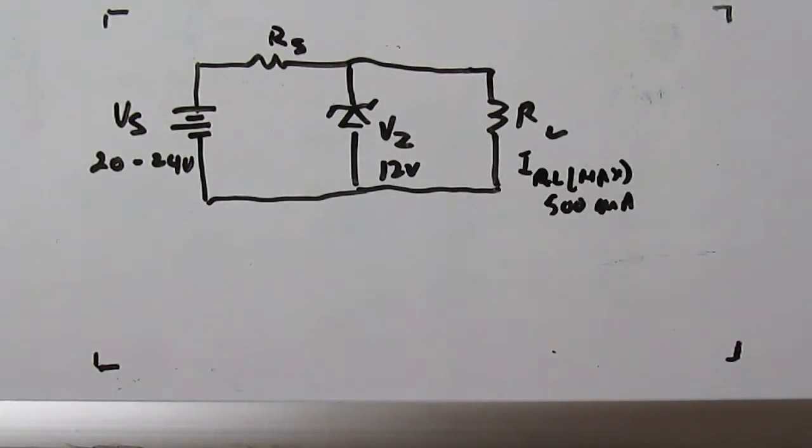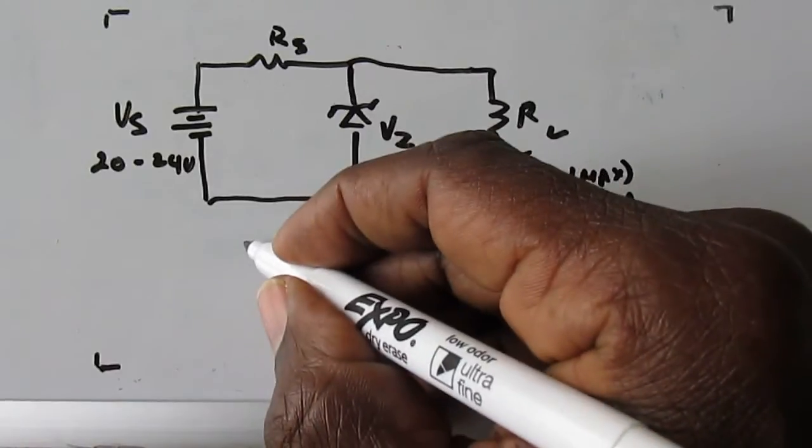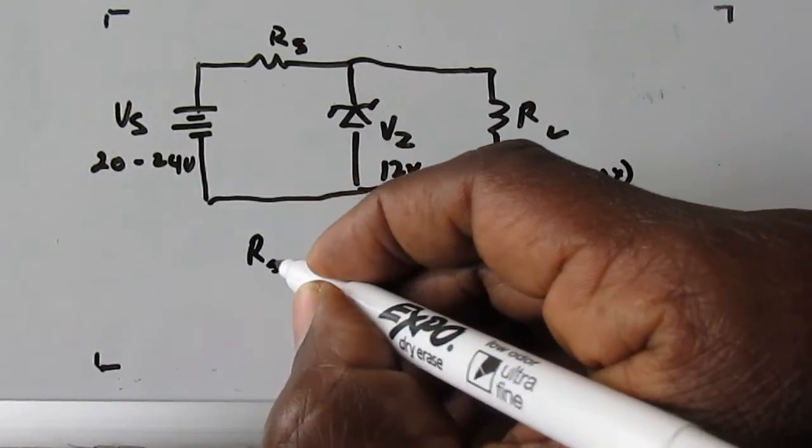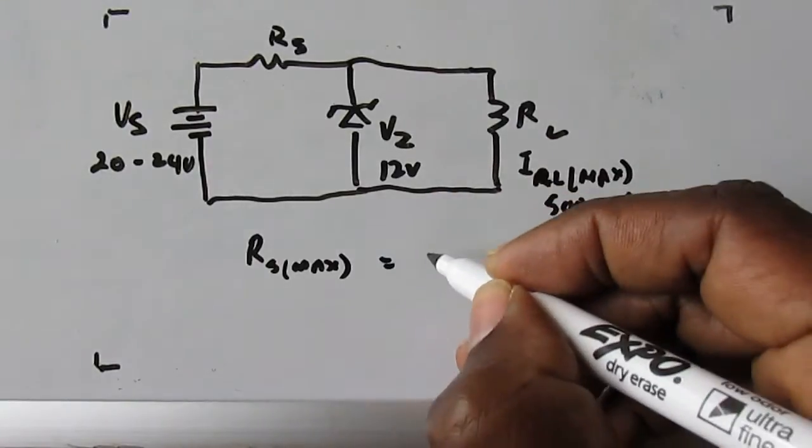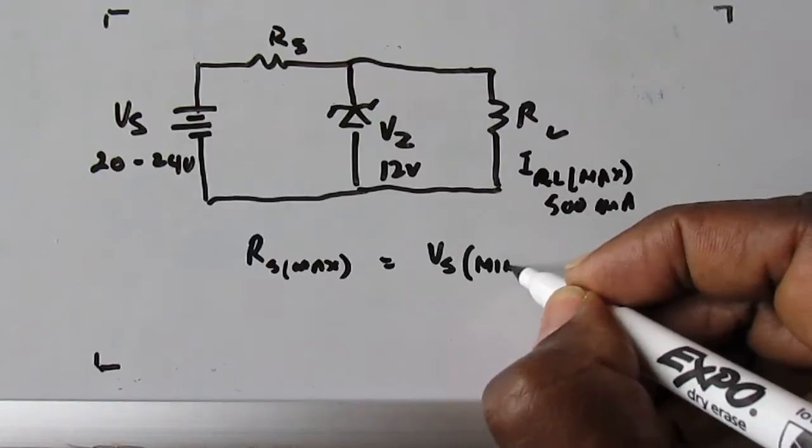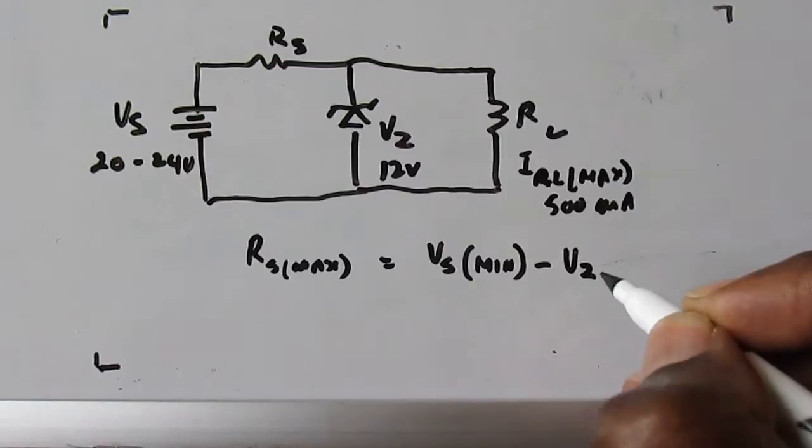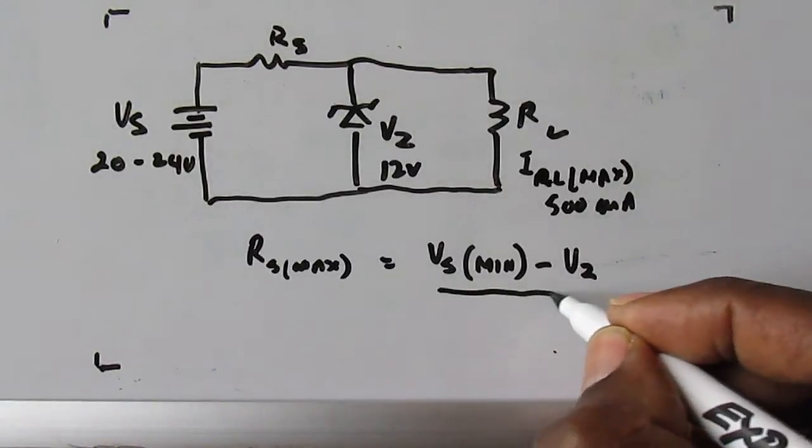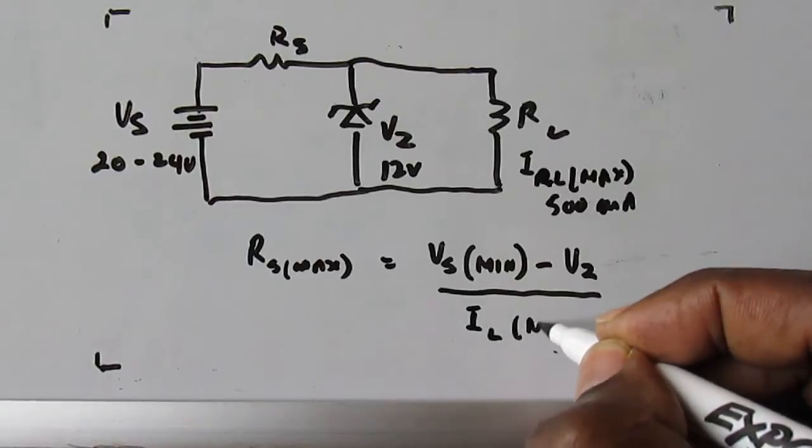Okay. The next step is to write the required equation. And the required equation is RS max equals VS min, the minimum voltage of the supply, minus the Zener diode voltage divided by IL max.